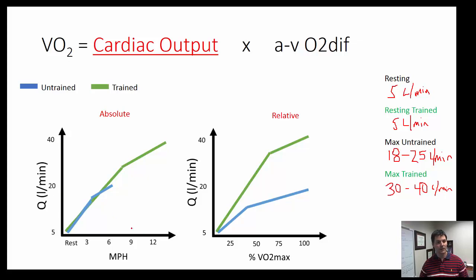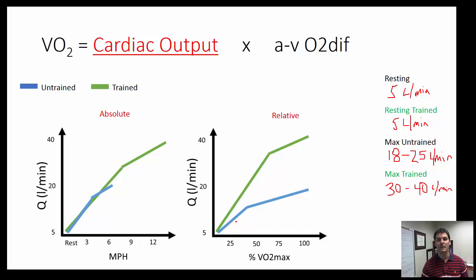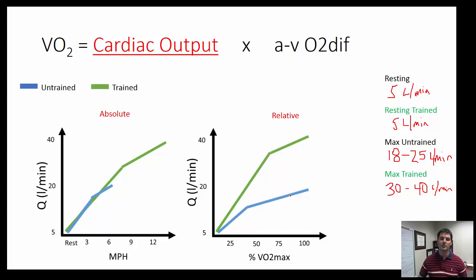If we look in relative terms, because a trained person's VO2 max is at a much higher intensity, for any given percentage of VO2 max, the well-trained person is actually working much harder — at a faster speed than an untrained individual. Therefore they must make more ATP, and consequently cardiac output is always greater in a trained individual over an untrained individual at any given relative percent of VO2 max.